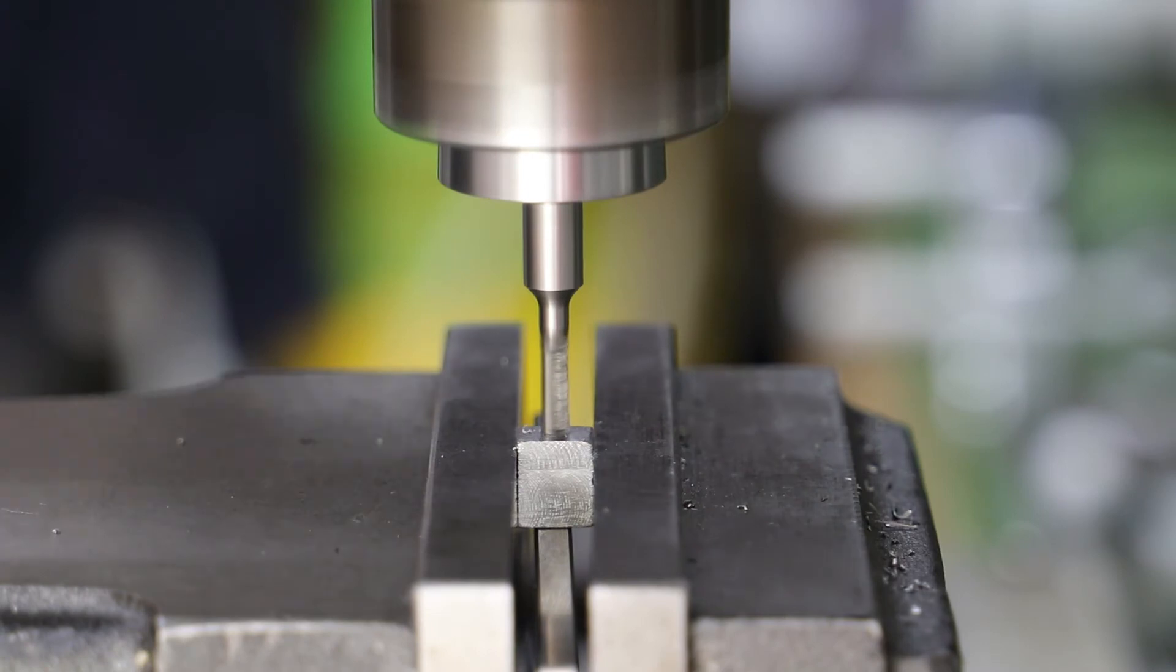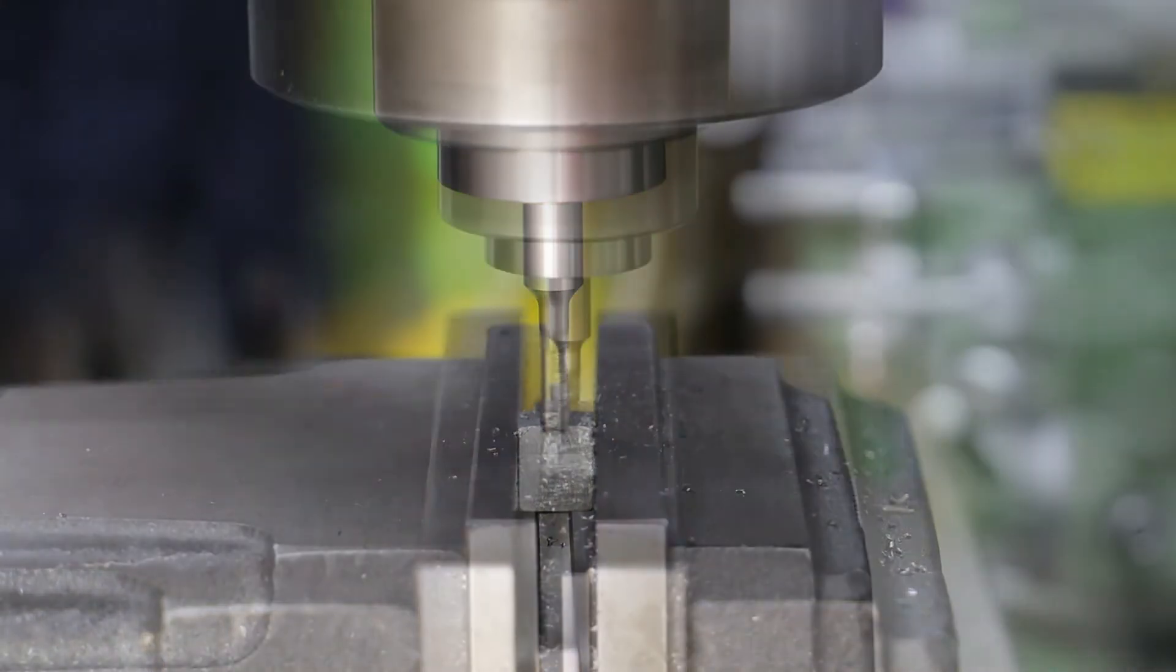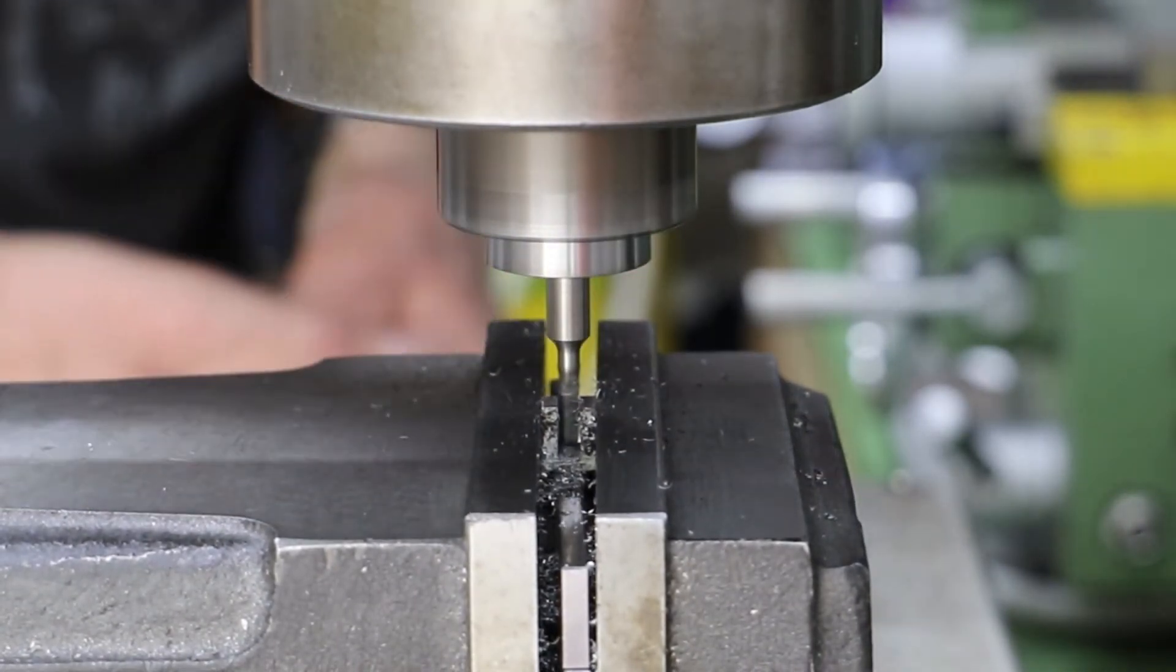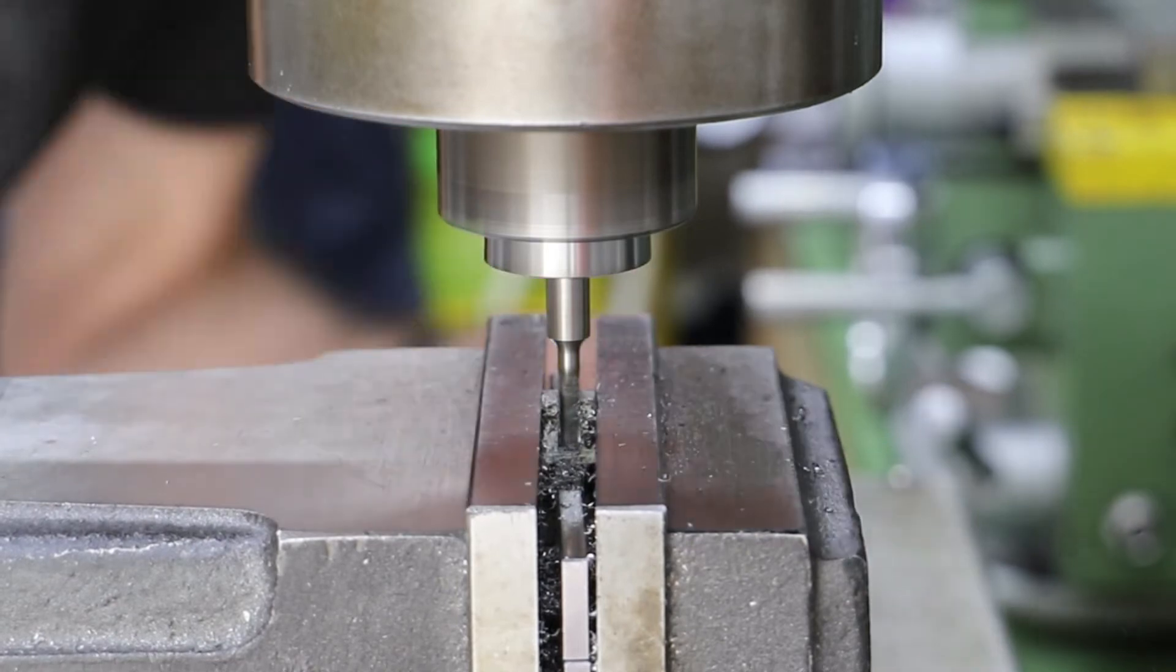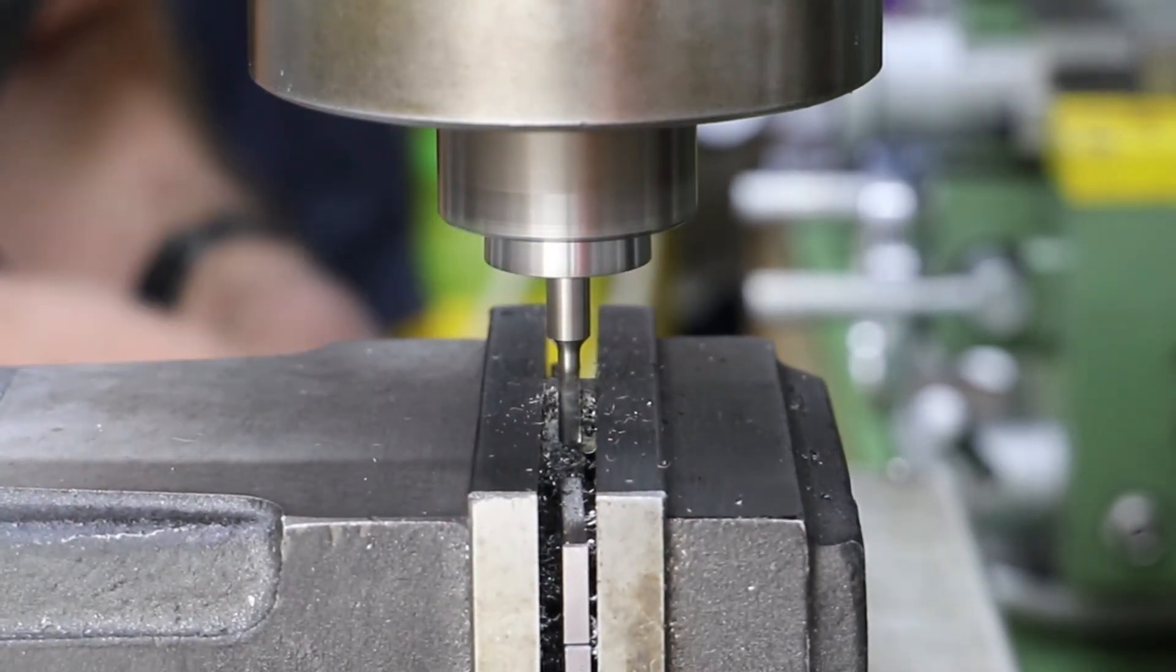Using a 1/8th end mill, I then move on and cut the main slot through the body. I probably did this a bit prematurely, and I would have been better off drilling the holes beforehand. As it was, after I cut the slot, I ended up Loctiting in a small piece of 3.2mm plate to give it some rigidity.